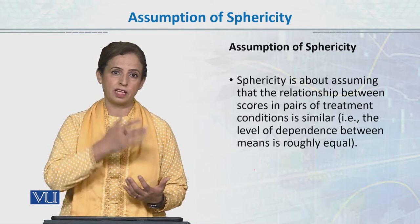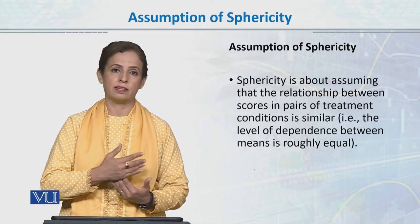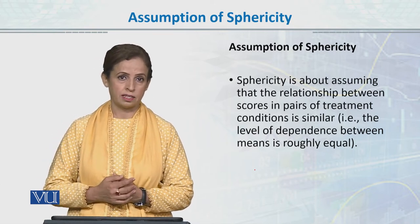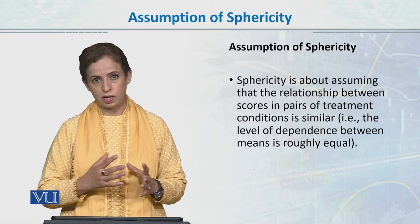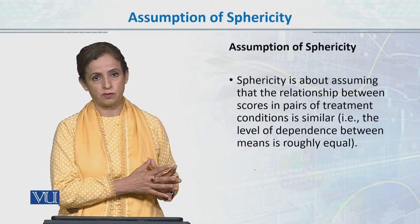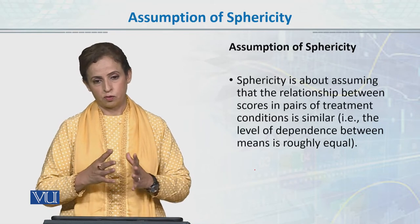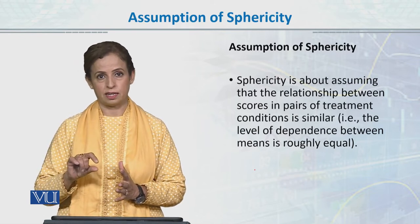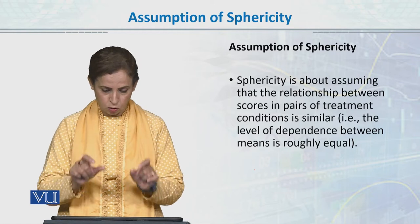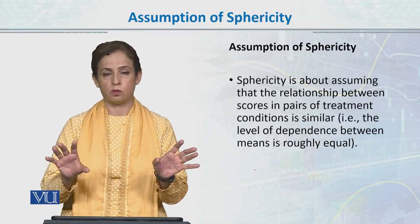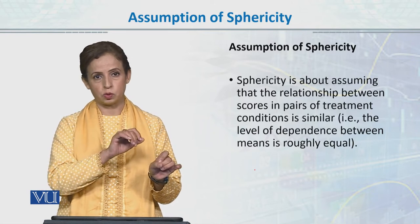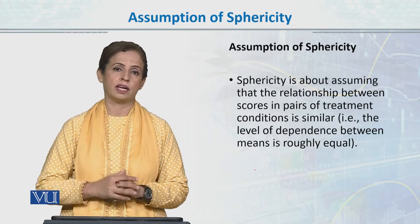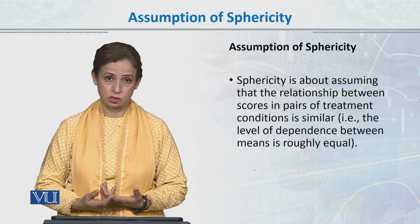We are not assuming they are the same people in level 1 and the same people in level 2. So यहां पे repeated measures में assumption हो जाती है — assumption of sphericity — जो homogeneity of variance से मिलती-जुलती है। लेकिन यहां हम कहते हैं कि variability of the difference between each pair equal होनी चाहिए, यानि individual pairs के बीच homogeneous variance होना जरूरी है।